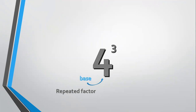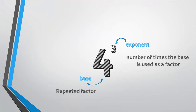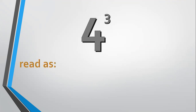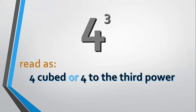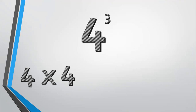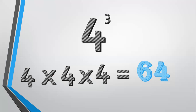3 is the exponent, or the number of times the base is used as a factor. In 4 cube, we can read it as '4 cubed,' '4 to the power of 3,' or '4 to the third power.' 4 cube means 4 times 4 times 4. 4 times 4 equals 16, and 16 times 4 equals 64. So the final answer of 4 cube is 64.